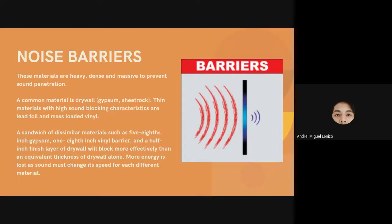Noise barriers are heavy, dense, and massive materials to prevent sound penetration. A common material is drywall gypsum or sheetrock. Thin materials with high sound-blocking characteristics include lead foil and mass-loaded vinyl. A sandwich of dissimilar materials — such as 5/8-inch gypsum, 1/8-inch vinyl barrier, and a half-inch finish layer of drywall — will block more effectively than an equivalent thickness of drywall alone, as more energy is lost when sound must change speed through each different material.